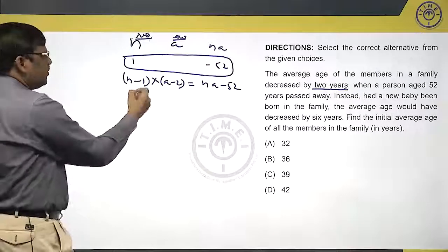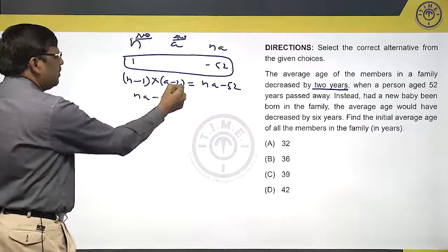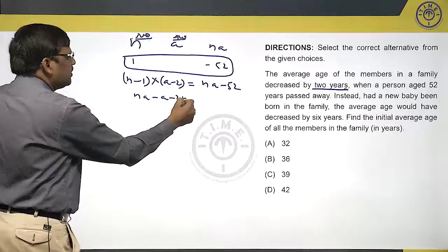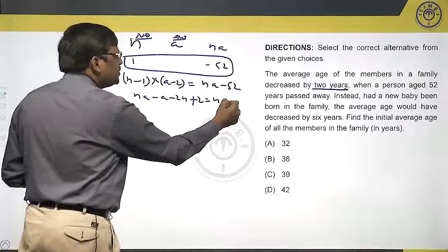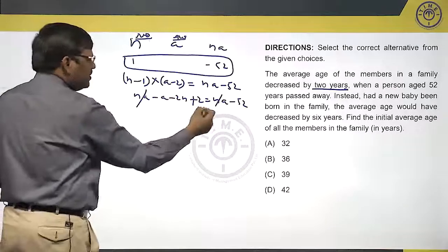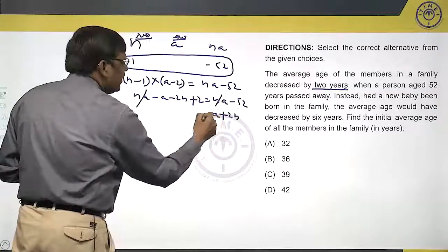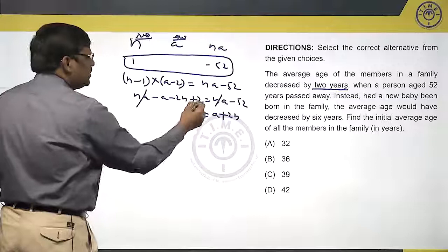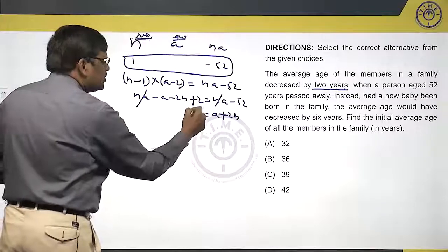Let us see. If I simplify what happens, n a minus a minus 2n plus 2 equals to n a minus 52. n a both sides gets cancelled. If I take this other side, a plus 2n, n equals to that 52 comes here, 54. So, this is one equation.